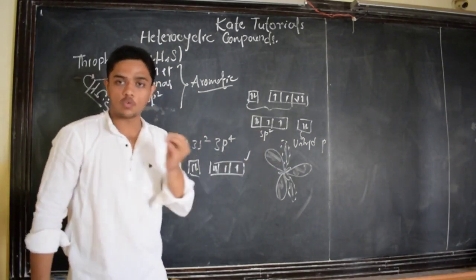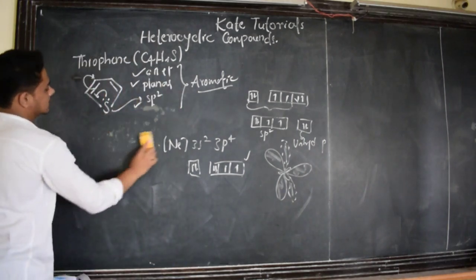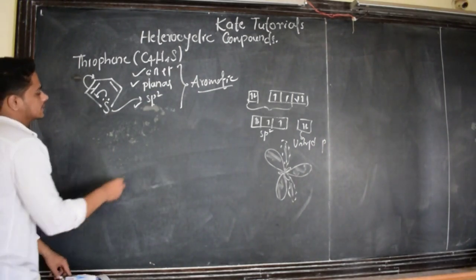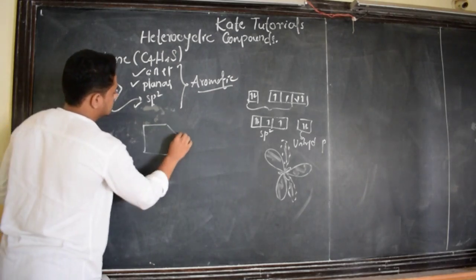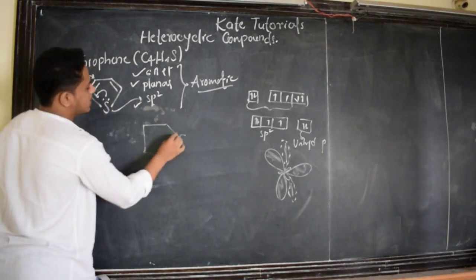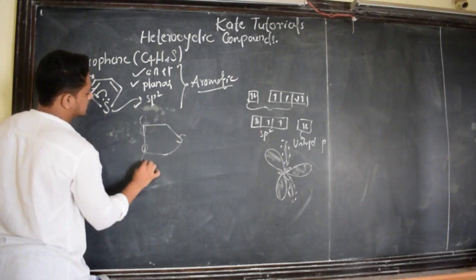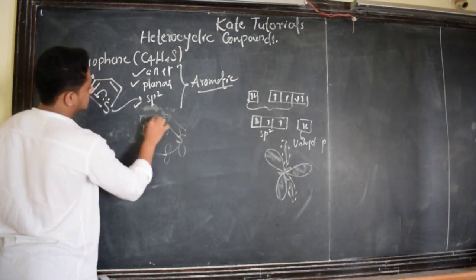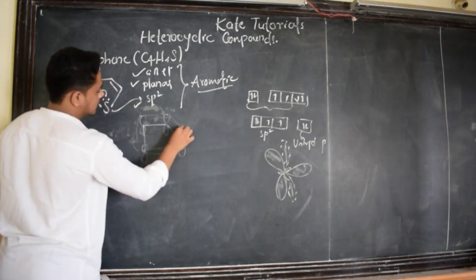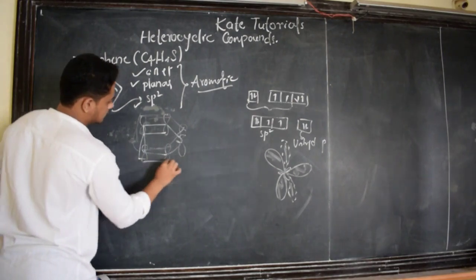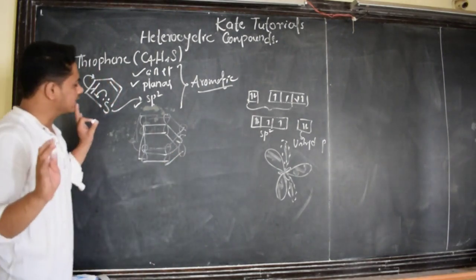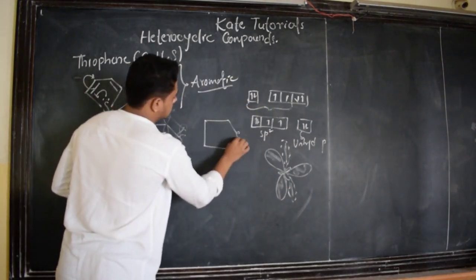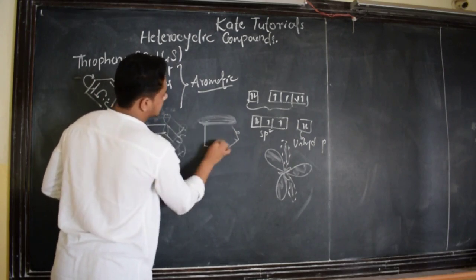These unhybridized p orbitals are going to be perpendicular to the plane and will involve in resonance, because carbon is also sp2 hybridized. All the sp2 hybridized orbitals are in-plane, but the unhybridized p orbitals of carbon as well as sulfur are perpendicular to the plane and involve in resonance. So the molecule is very rich in electrons — the electron density is more, making it electron-rich.